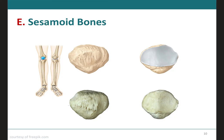Sesamoid bones, shaped like a sesame seed, develop in certain tendons where there is considerable friction, compression, and physical stress. They are not always completely ossified and measure only a few millimeters to centimeters in diameter, except for the two patellae, which are the kneecaps — the largest of the sesamoid bones. Sesamoid bones vary in number from person to person, except for the patellae, which are located in the quadriceps femoris tendon and are normally present in all individuals. Functionally, they protect tendons from excessive wear and tear and can alter the direction of pull of a tendon, improving mechanical advantage at the joint.